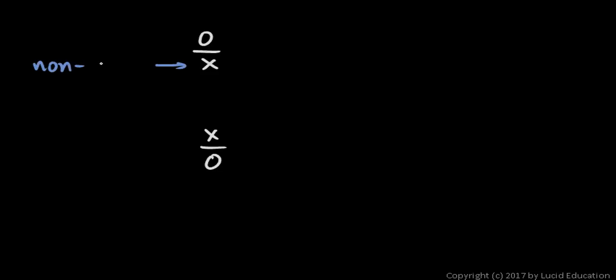Remember that when you are evaluating expressions, 0 over any non-zero number — so x here is anything that isn't 0 — evaluates to 0. That's not an indeterminate form. That's a number: 0.